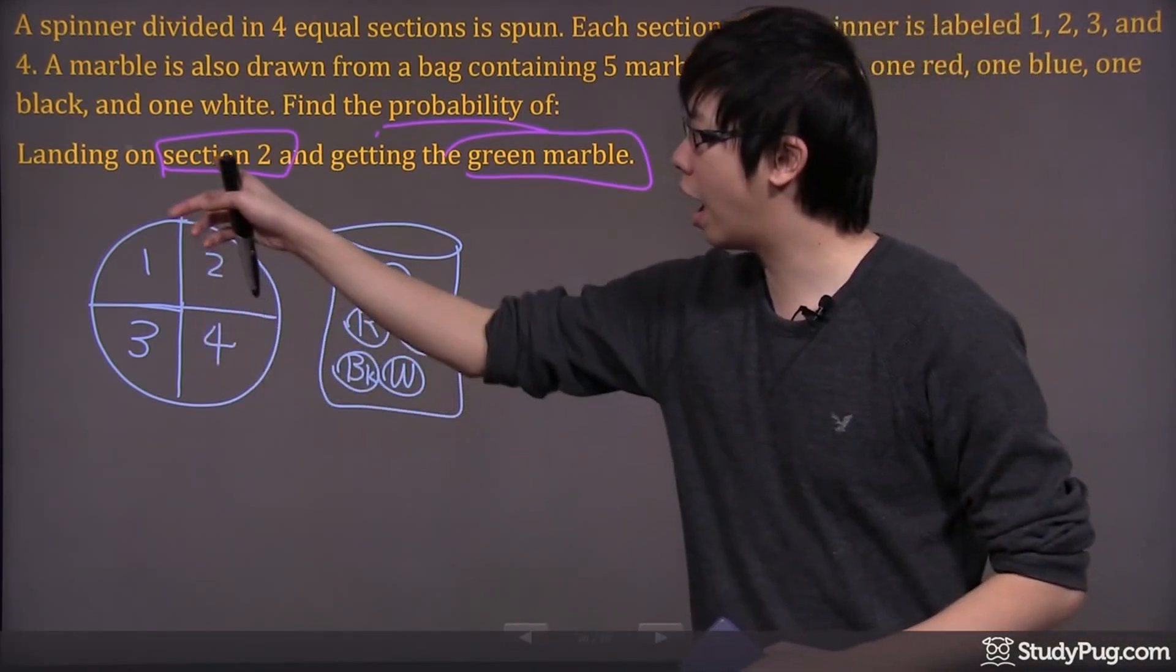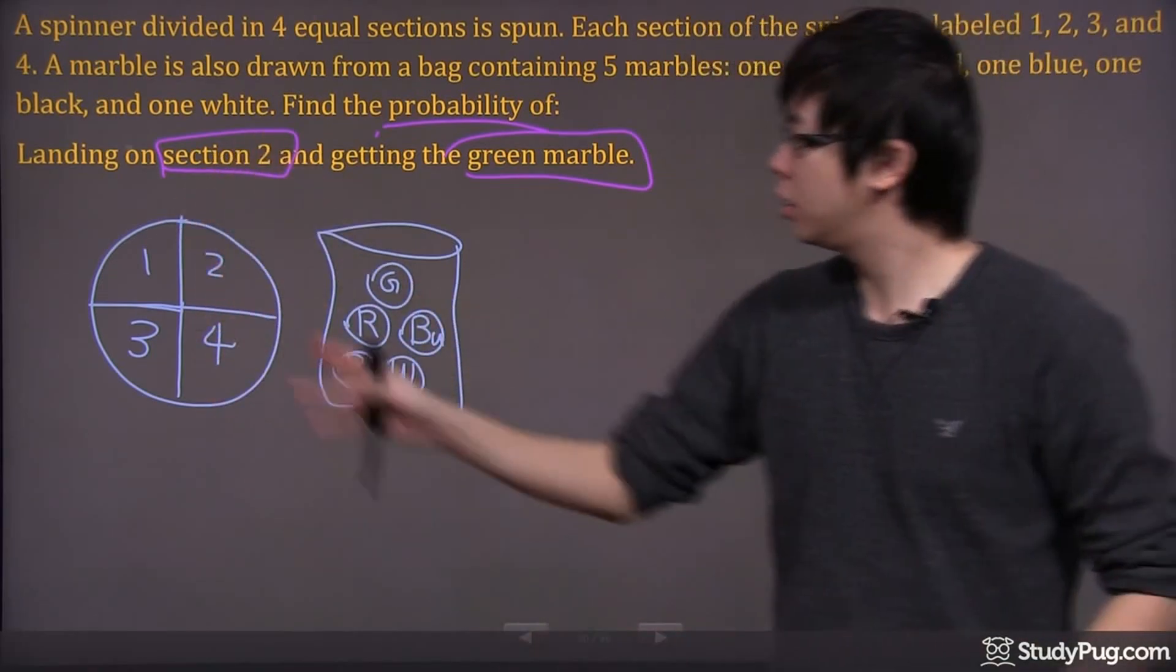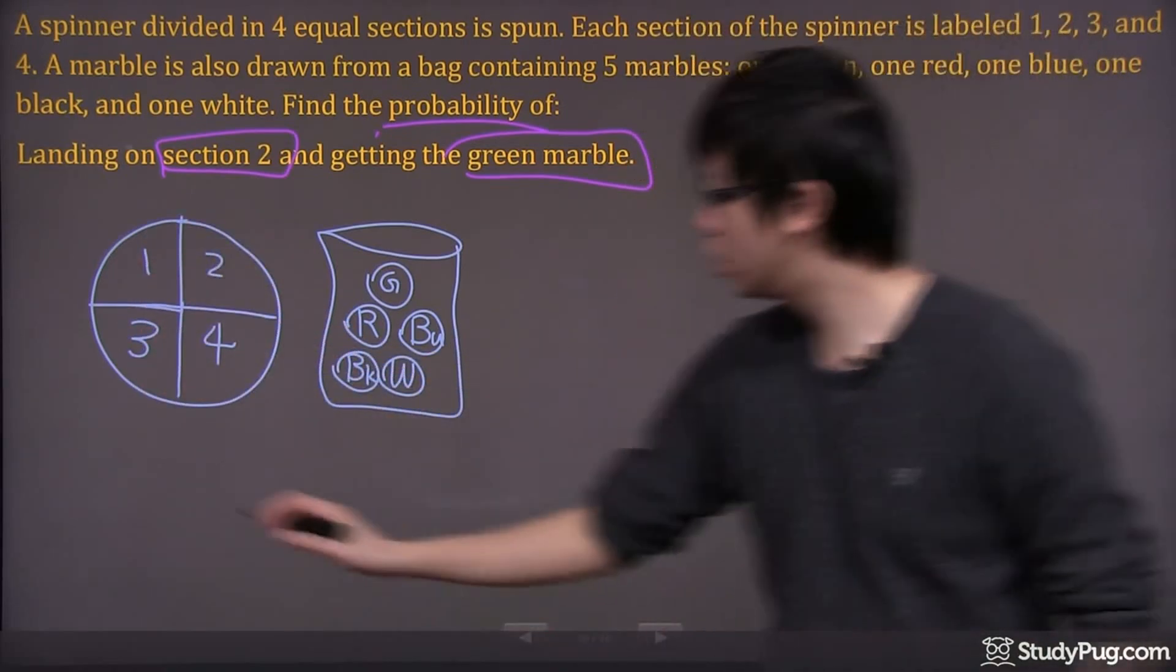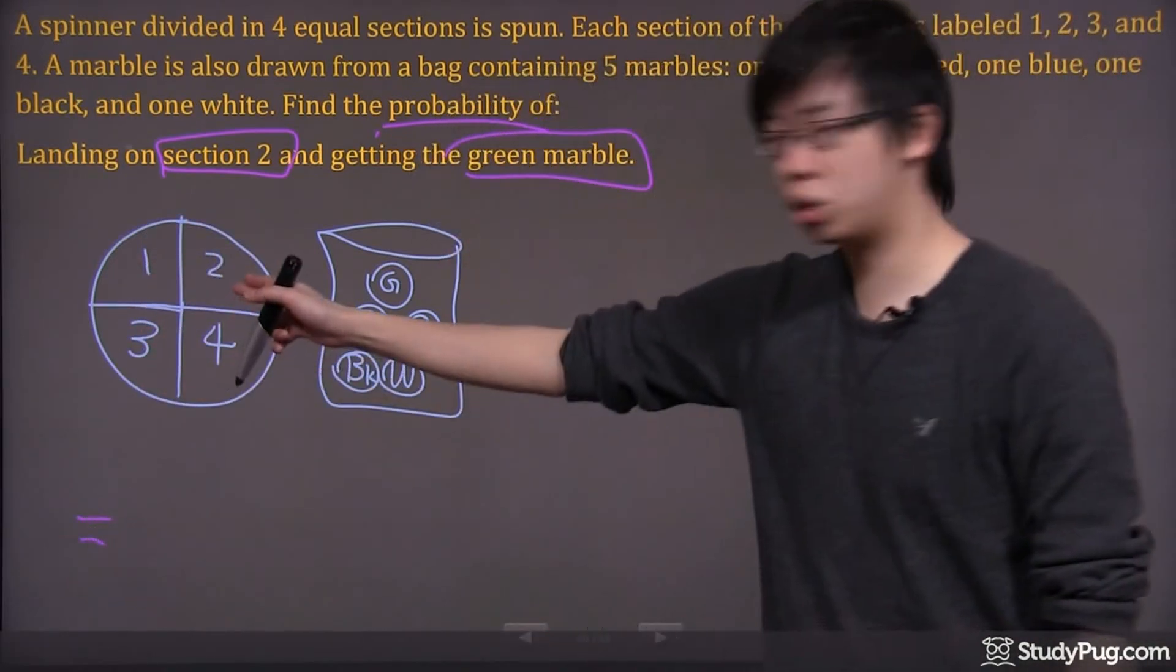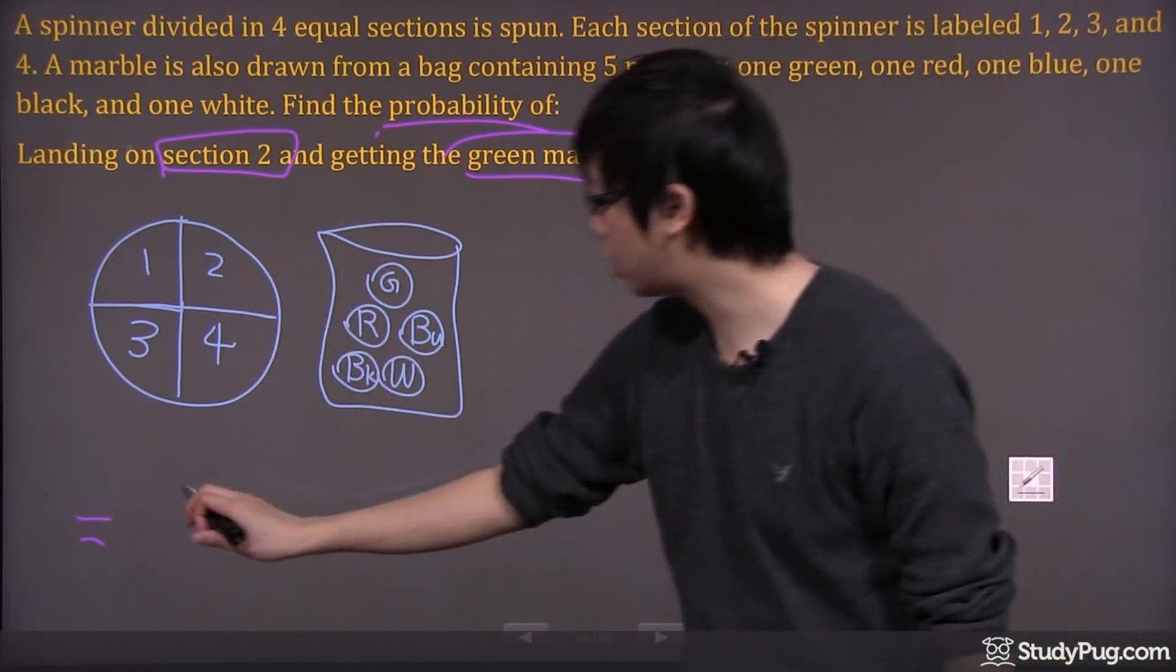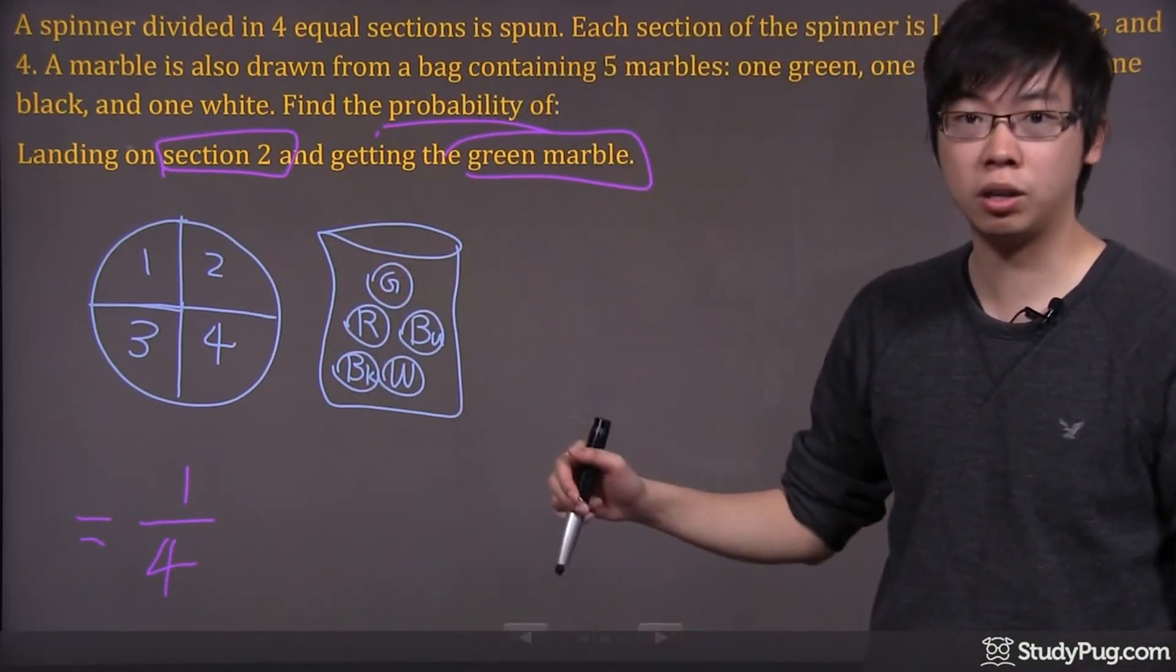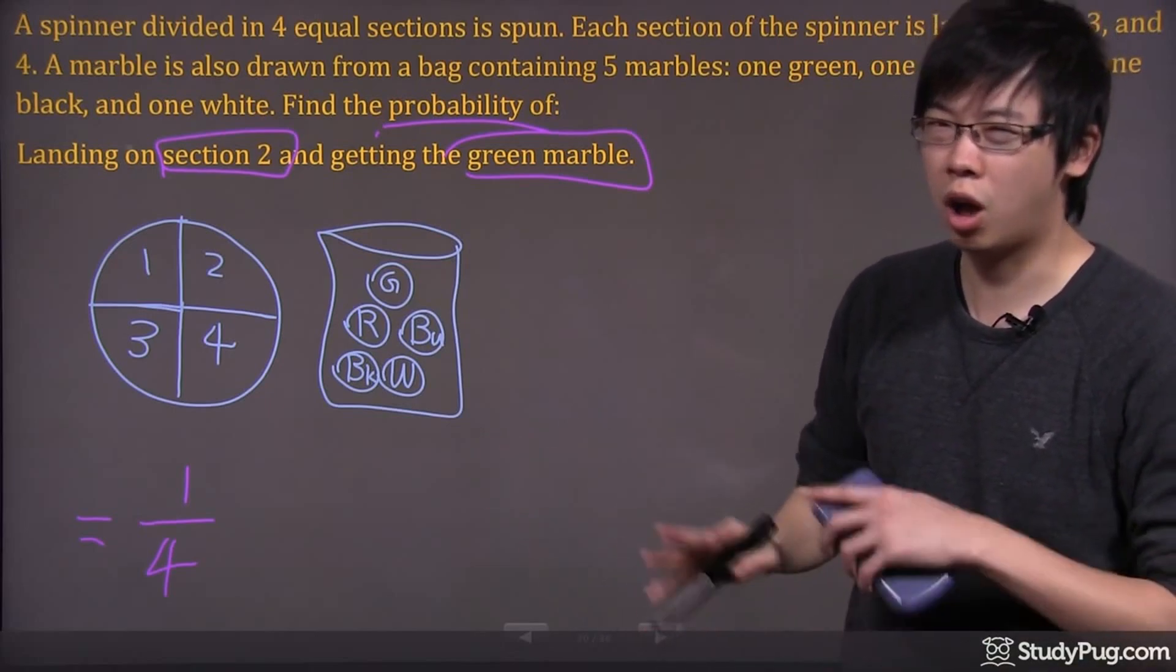Let's look at how to get section two. The spinner is divided into four equal parts, right? You want to get a two; there's only one of them. That's one out of four possibilities to get a two. It's actually the same probability for all the numbers.